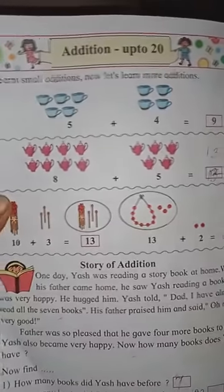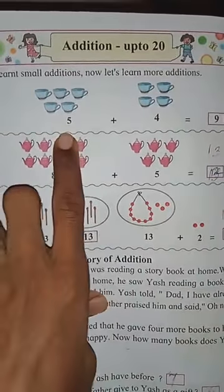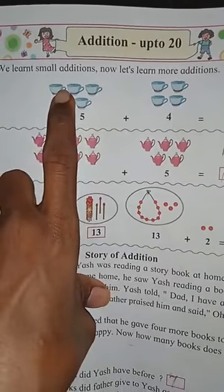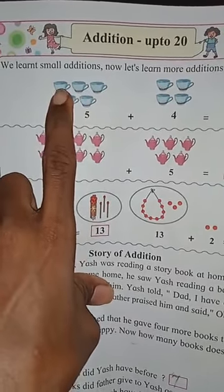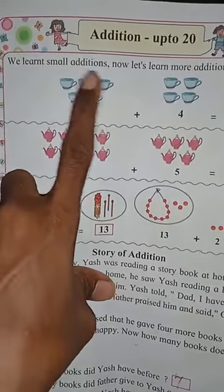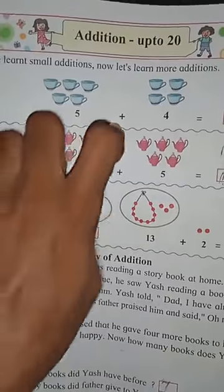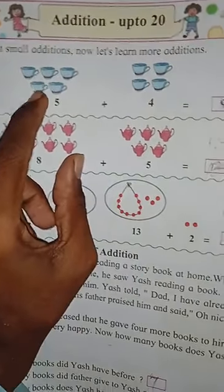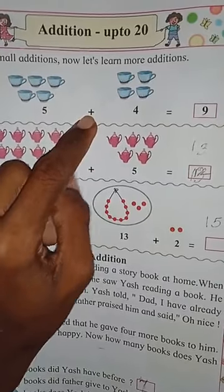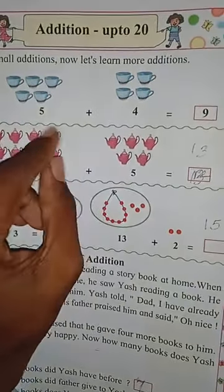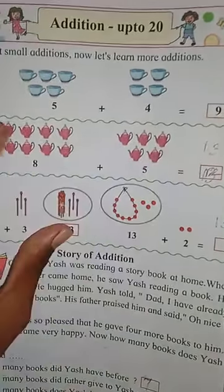Now let's start with page number sixty — addition up to twenty. Here the figure is given in your test book. Let me do the small addition. One, two, three, four, and five — how many cups are there? Five cups. Five plus how many cups? One, two, three, four — four cups are there. Five plus four is written like this, and five plus four is how much? Nine. Five plus four is nine.